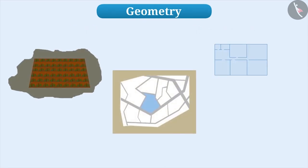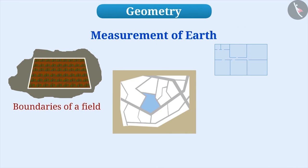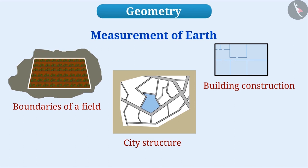During the ancient civilization, the land was measured for different reasons such as to identify the boundaries of a field, to know the structure of the city, during construction of a building, etc.